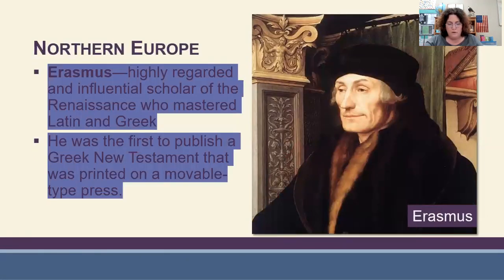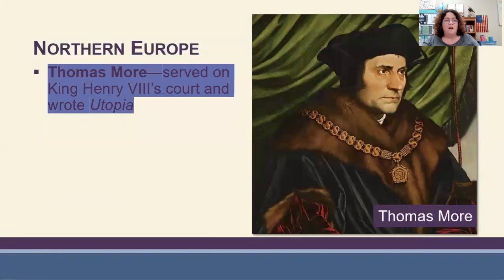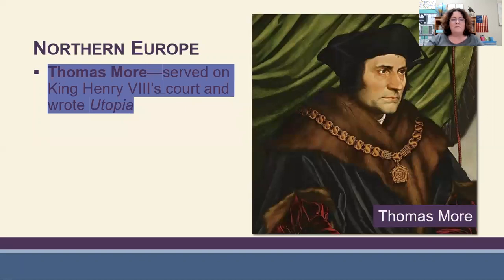In northern Europe, Erasmus was a highly regarded and influential scholar of the Renaissance who mastered both Latin and Greek. He was first to publish a Greek New Testament printed on the movable type press, which became an essential tool for the Reformation. Thomas More was a close friend of Erasmus and served in the court of King Henry the Eighth in England. His work Utopia — meaning 'nowhere' — is a story about an imaginary country based on Christian principles and the philosophy of Plato, presenting his view of an ideal, perfect society.